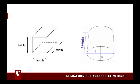The urinary bladder holds urine, and depending on how full that bladder is, it takes on different shapes. So having one single mathematical formula doesn't really work. However, because we are measuring the volume of a container, we are going to use the fundamental mathematical formula that involves measuring the length, the height, and the width of the bladder to determine volume.